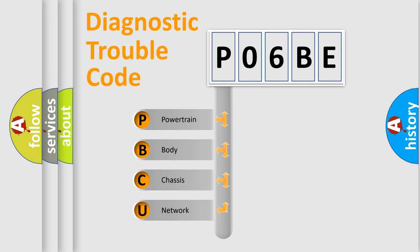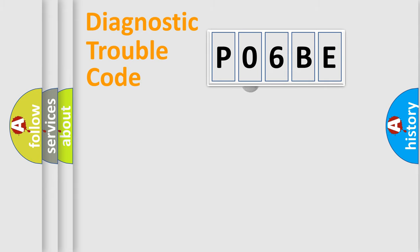We divide the electric system of automobile into four basic units: Powertrain, Body, Chassis, Network. This distribution is defined in the first character code.